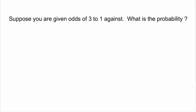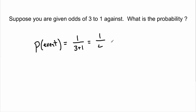Suppose you're given odds of three to one against — what's the probability? Three to one: add those together, that's four total possibilities, so the probability of this event would be one out of four. One out of four is twenty-five percent, so you could write the probability as one quarter, 0.25, or twenty-five percent.